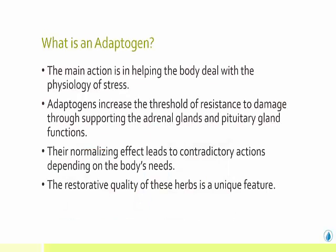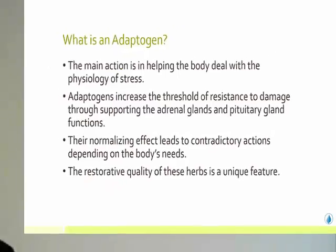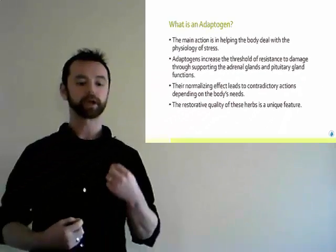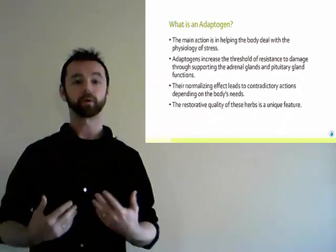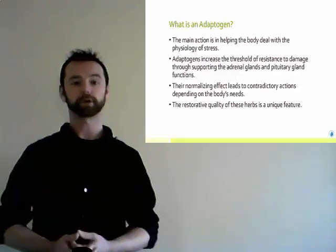First, let's talk about what is an adaptogen. The easiest way to define an adaptogen is to say it's any substance — here, of course, we're talking about botanicals — but any substance that helps the body buffer stress, that helps the body deal better with any kind of stress. That can be physical stress, physiological stress, or emotional stress.